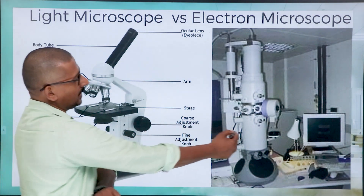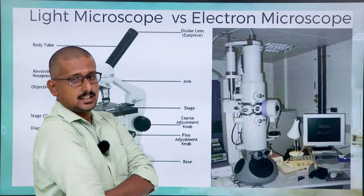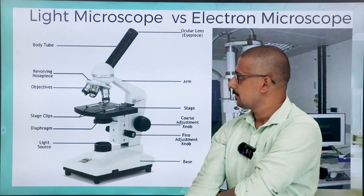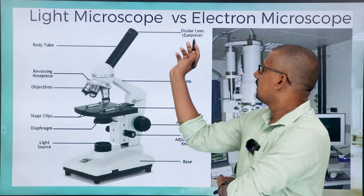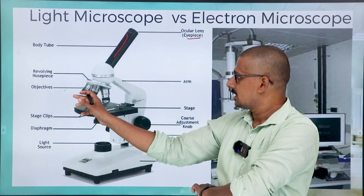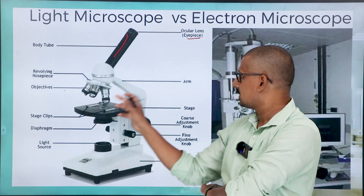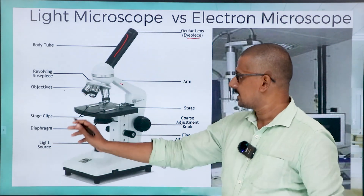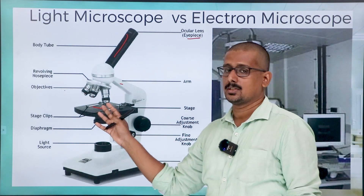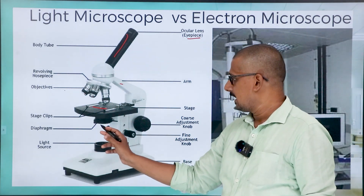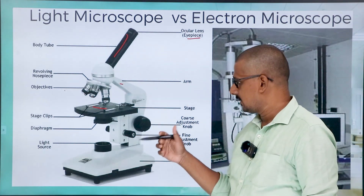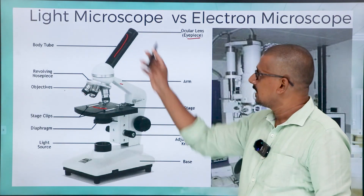Here is the picture of the light microscope and the electron microscope. The electron microscope is a huge cylindrical structure, like a scanning machine. The light microscope has many parts: starting with the ocular lens or eyepiece, the body tube, revolving nosepiece and objectives, the arm where you hold the microscope, stage clips, the slide where specimens are placed, diaphragm, light source, coarse adjustment, and fine adjustment.